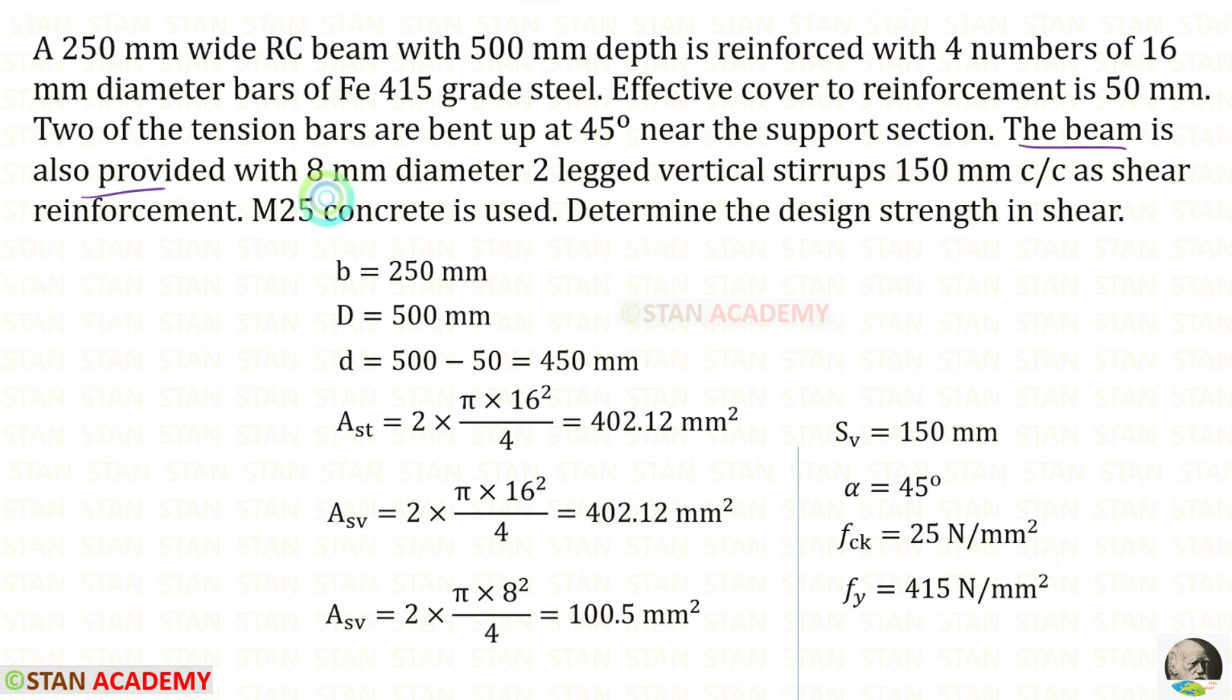The beam is also provided with 8 mm diameter, 2 legged vertical stirrups. Using that data, we can find ASV. Since it is 2 legged, we have to multiply 2 into the area of the bar. For ASV, we will get this. There are two terms known as ASV. We can see that little later, how to apply them in the formulas. The stirrups spacing is given as 150 mm. Alpha is 45 degree.